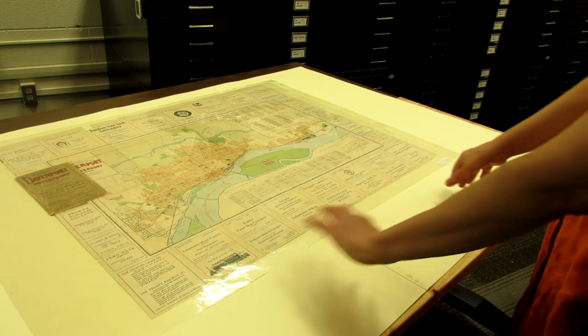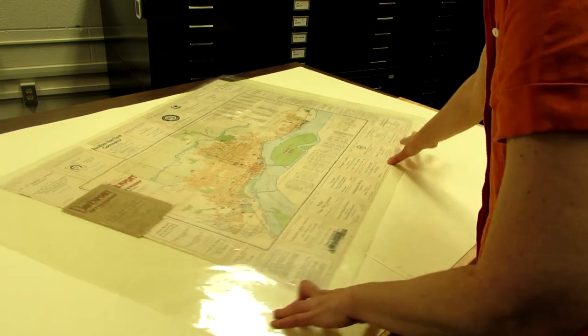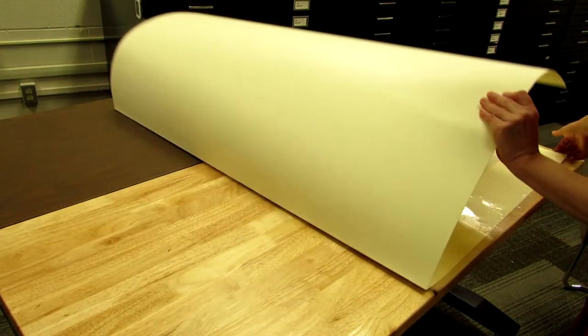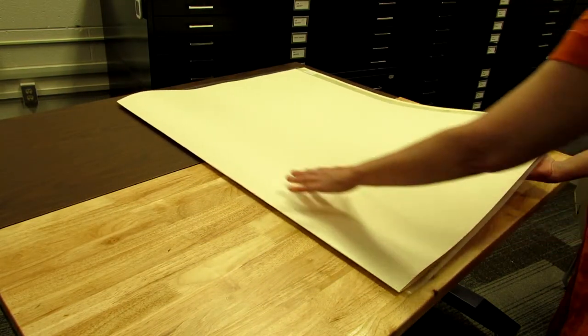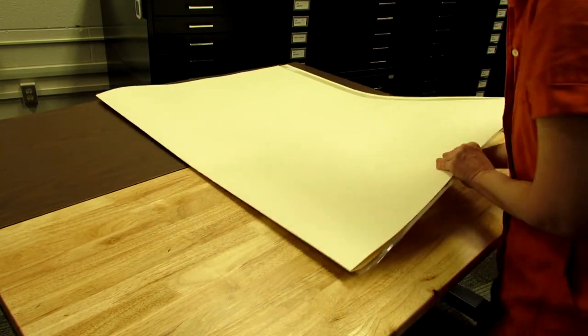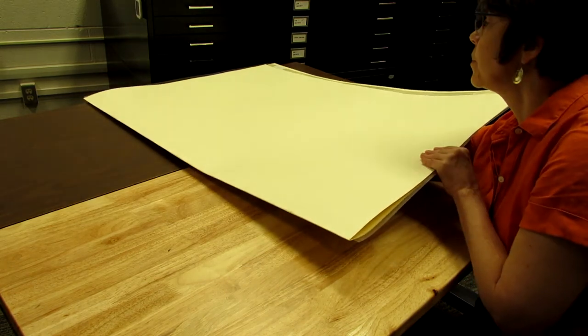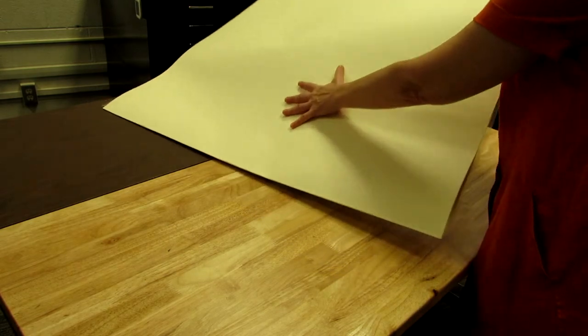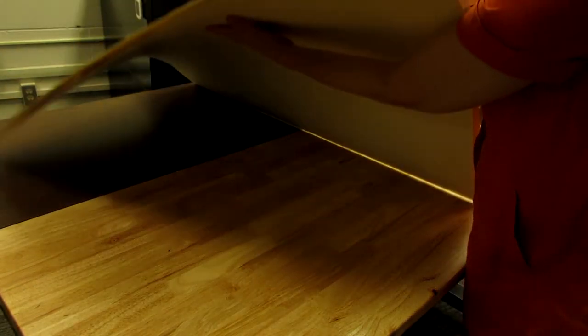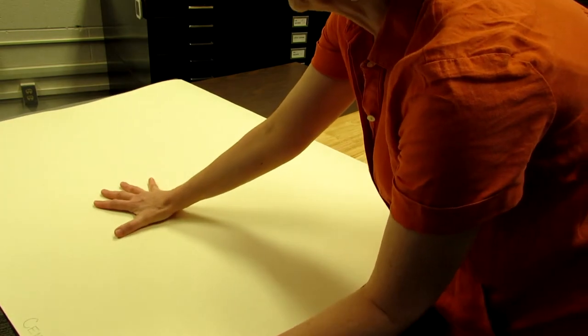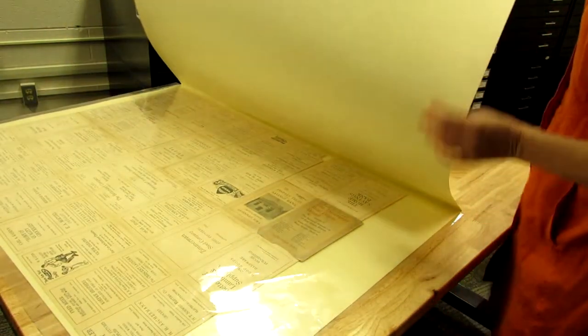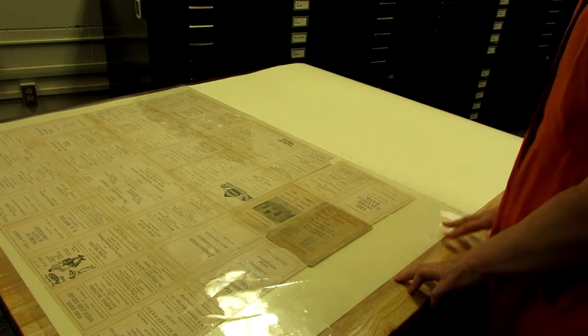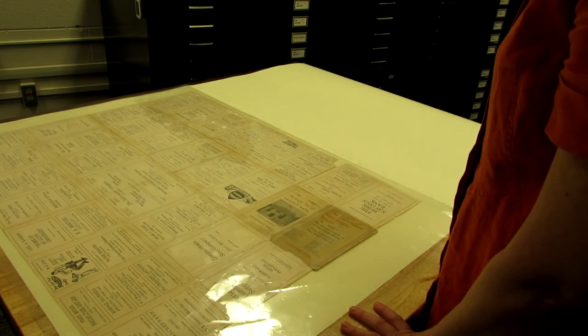To view the other side of a large item like this, we'll close it back up in the folder. Give it some good support underneath. You might need a partner to help you with this. And flip it over. And here we can see the back side of the map with all of the advertisements from that era.